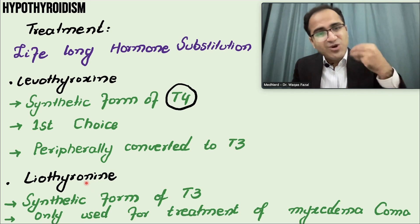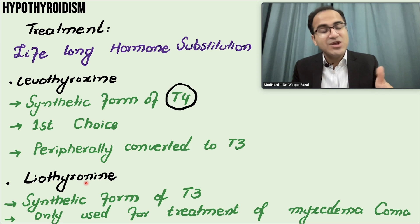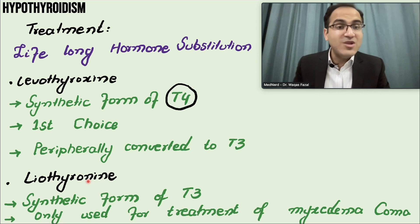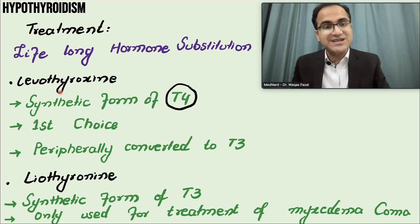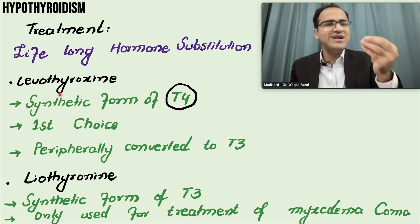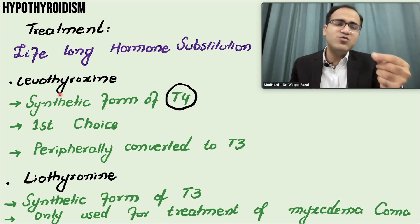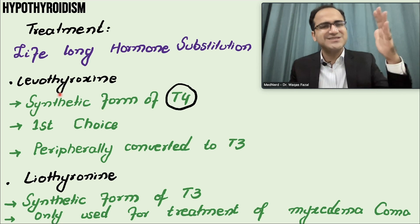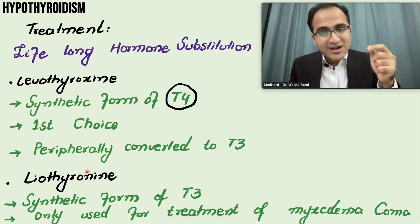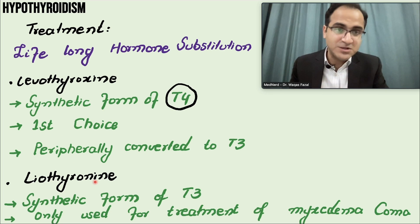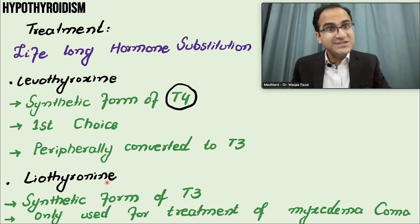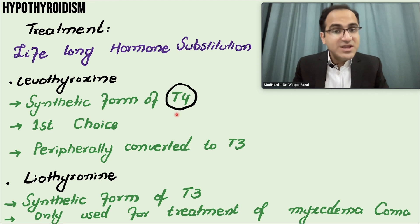Because of liothyronine's short half-life, you have to give repeated dosages throughout the day. Levothyroxine, on the other hand, has a long half-life, so once-daily dosing provides the patient thyroid hormone for the next 24 hours. But why is liothyronine used in myxedema coma?